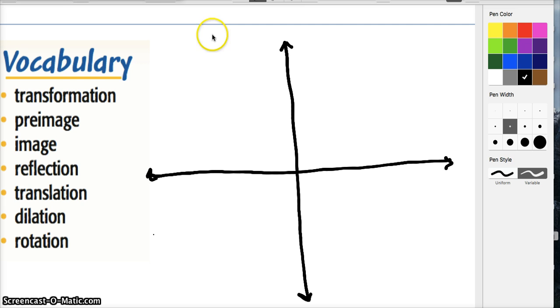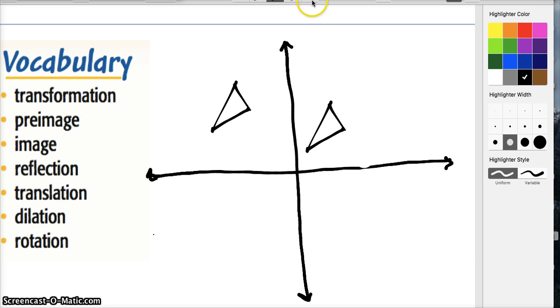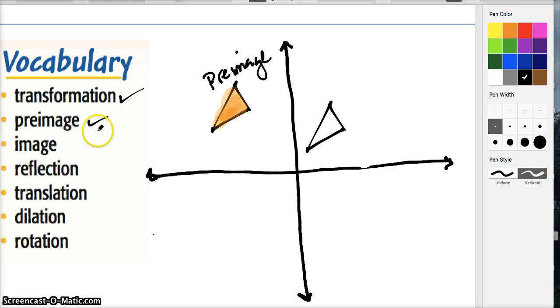What that means is we might start off with a shape, like say this triangle here. When we talk about transforming this triangle, we can do a few things, like taking the triangle and moving it from one place to another. That type of transformation is simply called a translation. This is the guy we started with, right? So this is considered the preimage. Transformation, preimage, covered.